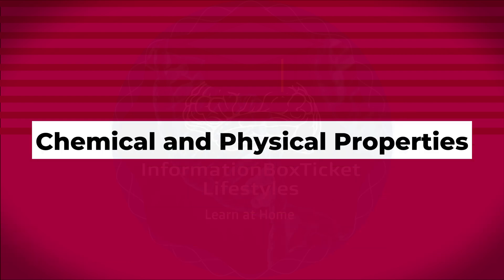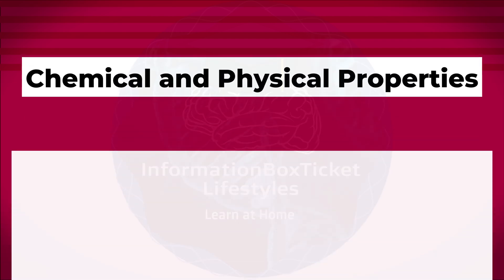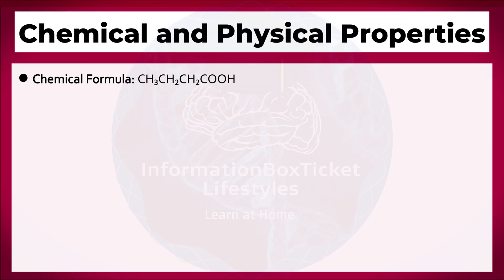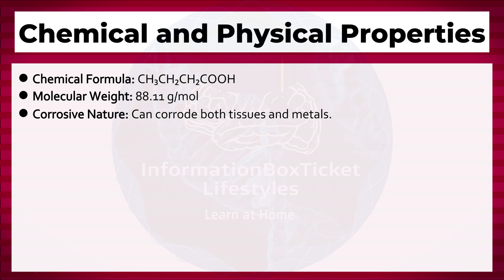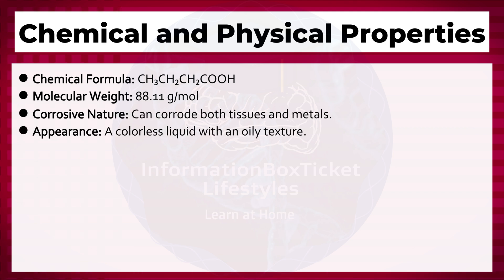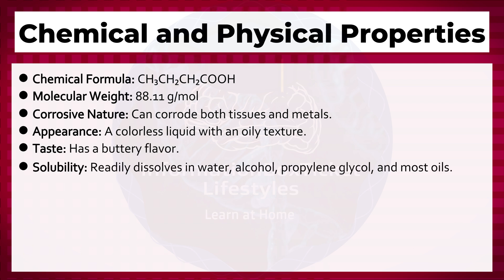Butyric acid chemical and physical properties: Chemical formula CH3CH2CH2COOH. Molecular weight: 88.11 grams per mole. Corrosive nature: can corrode both tissues and metals. Appearance: a colorless liquid with an oily texture. Taste: has a buttery flavor. Solubility: readily dissolves in water, alcohol, propylene glycol, and most oils.